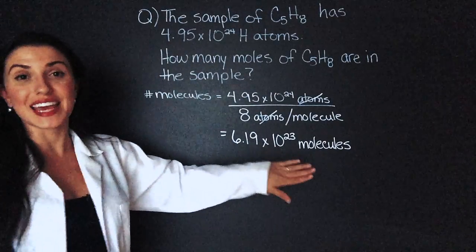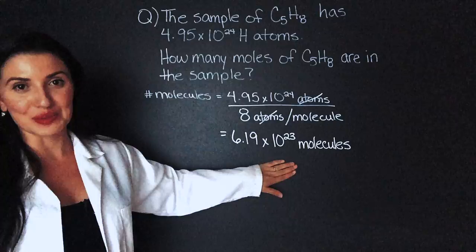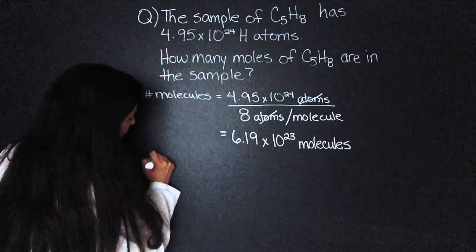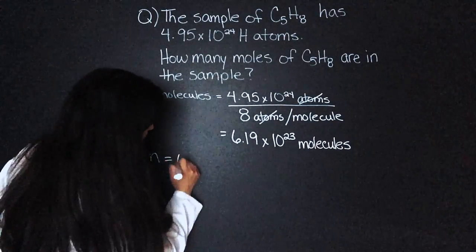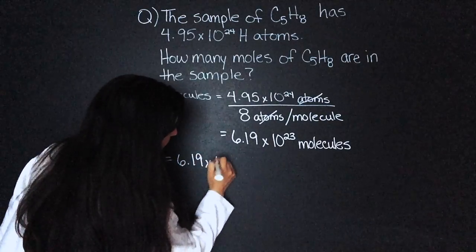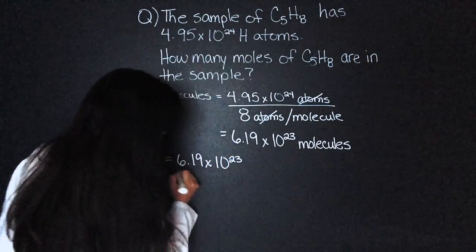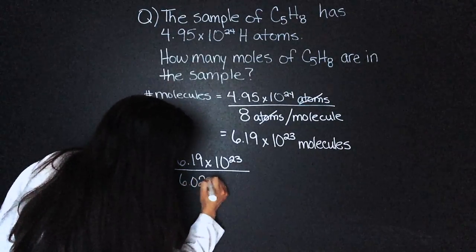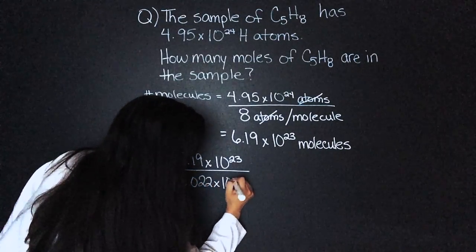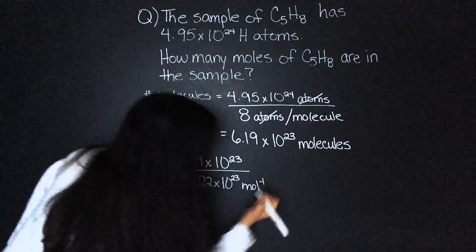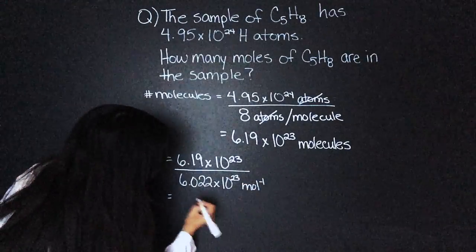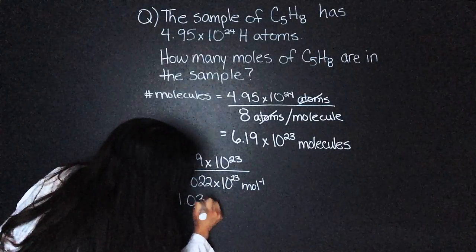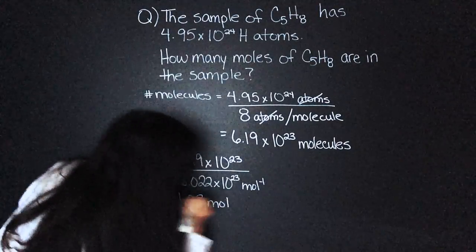Now we can take this number and use it to find the moles. Moles equals number of molecules 6.19 times 10 to the 23 divided by Avogadro's number 6.022 times 10 to the 23 moles to the negative 1. That equals 1.03 moles.